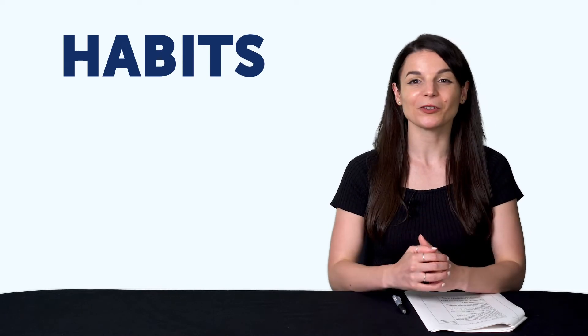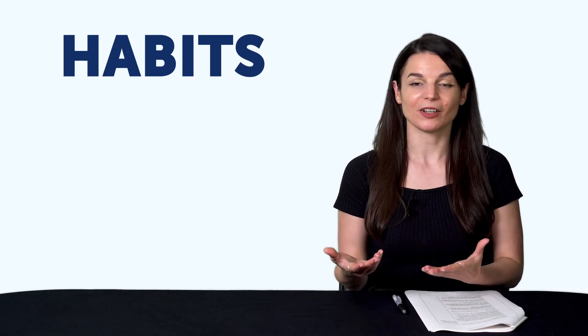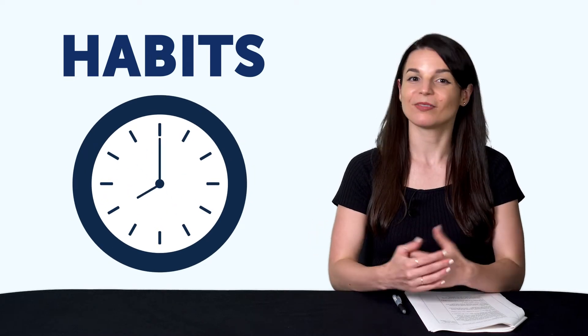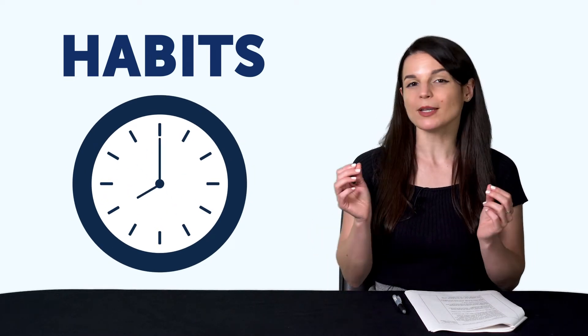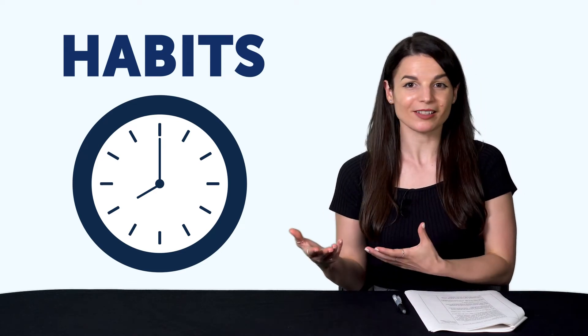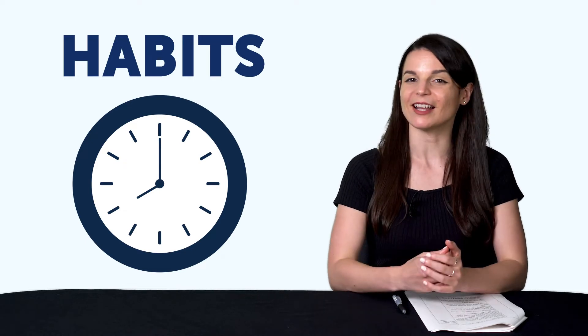Habits start with a cue, which is an outside signal. For example, it's 8pm, or you smell some food at 8pm. Then, a craving. If you eat dinner at 8pm, you'll start wanting to eat. Then the response. You eat. And then the reward. You feel satisfied.